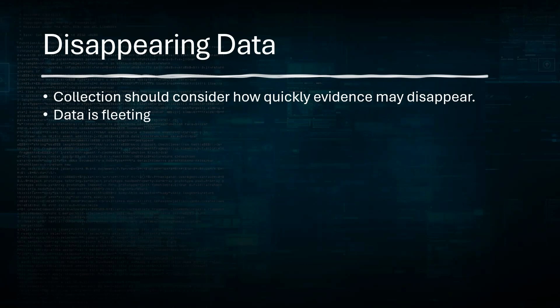There are a couple of reasons why data may disappear off your device. The first is wear leveling. Wear leveling in a cell phone is technology used in the phone's internal flash memory to distribute write operations evenly across all memory blocks. It does this to prevent any single block from wearing out too quickly and extends the lifespan of the phone's storage by avoiding hot spots where data is repeatedly written to the same location. The phone keeps track of how many times each memory block has been written to and actively moves data around to ensure writes are evenly distributed.